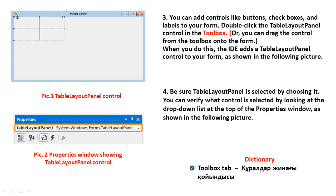Fourth step: be sure the Table Layout Panel is selected by choosing it. You can verify what control is selected by looking at the drop-down list at the top of the Properties window as shown in the following pictures. New phrase: Toolbox tab.